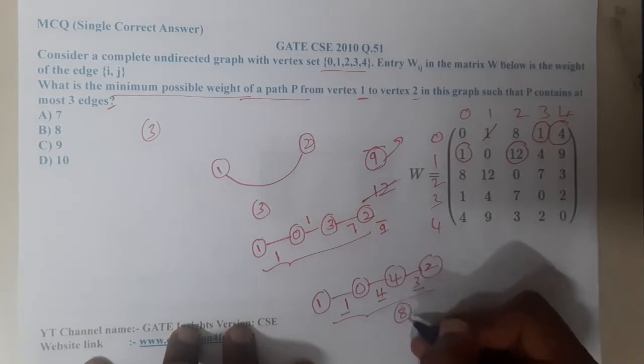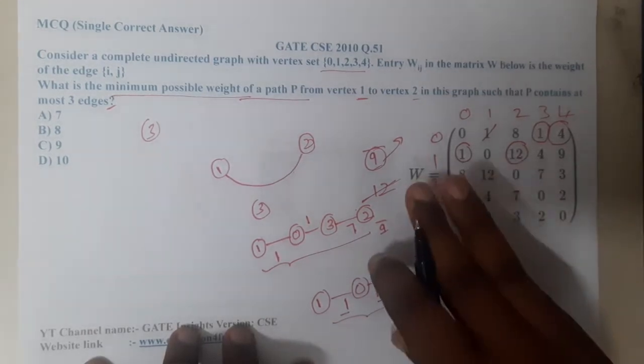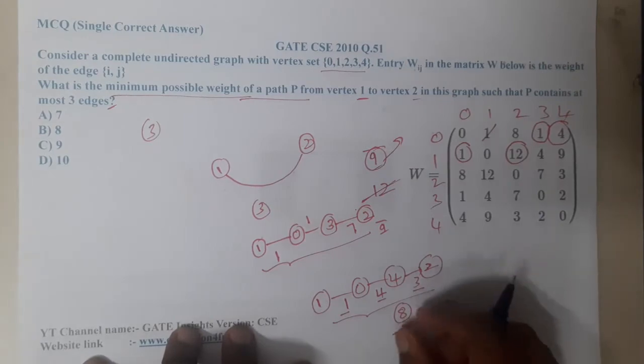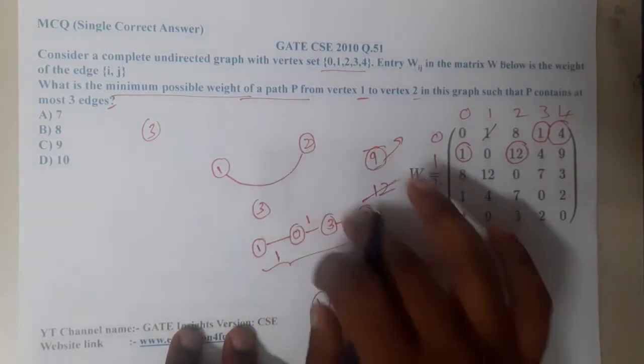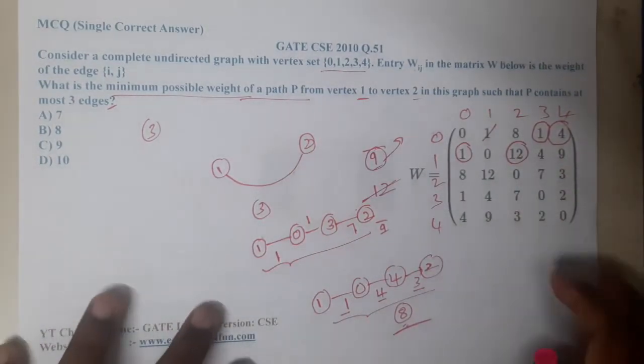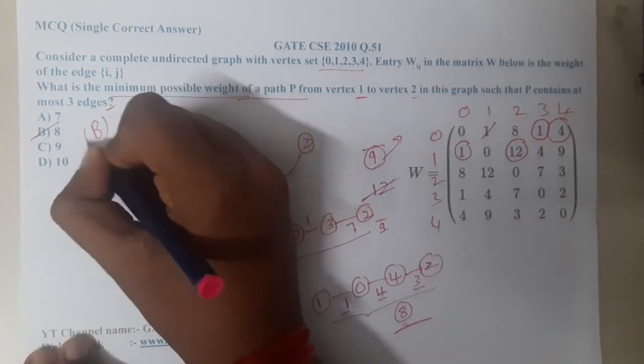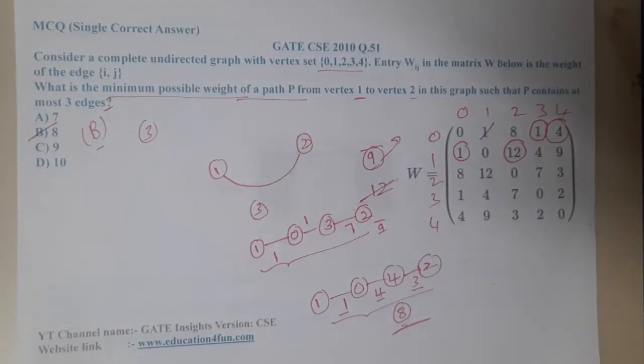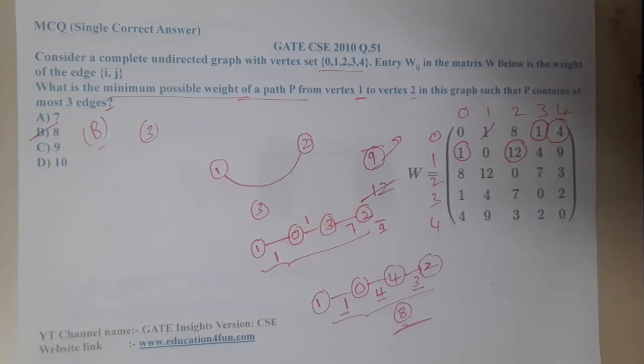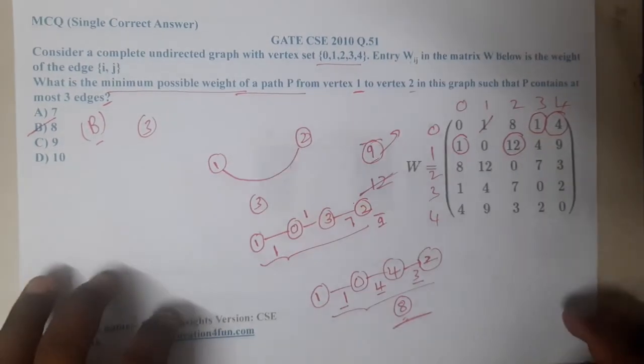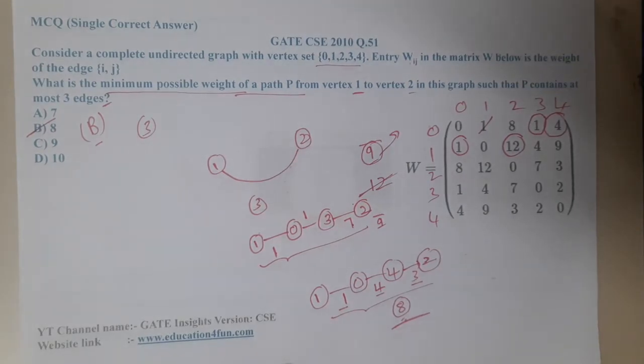You can try some more combinations. In this way, slowly if you construct some small examples, slowly you can understand the thing. Basically, 8 is the shortest minimum distance. I hope everyone got a clear idea. In the next lecture, let us continue with the next question. Let us meet in the next lecture. Thank you.